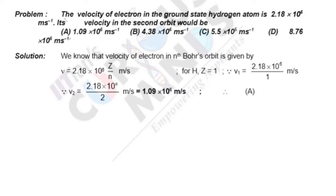Hello friends, let us solve this problem. The velocity of electron in the ground state of hydrogen atom is 2.18 × 10^6 m/s. Its velocity in the second orbit would be...